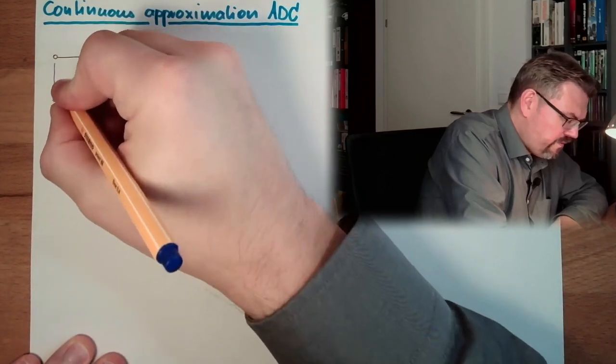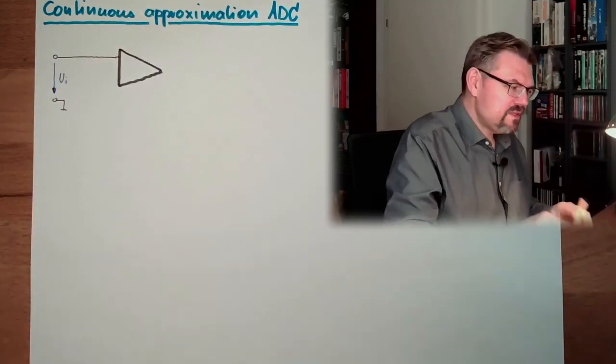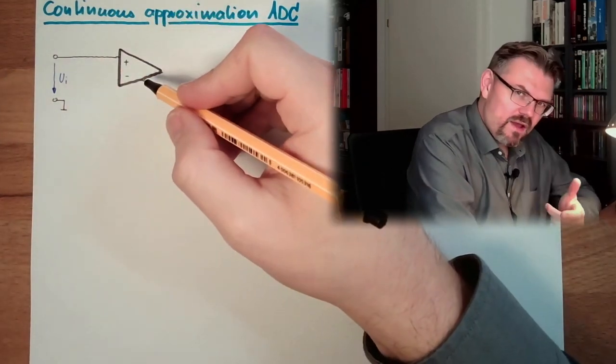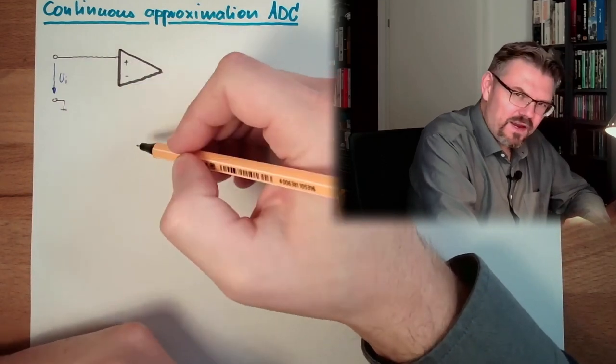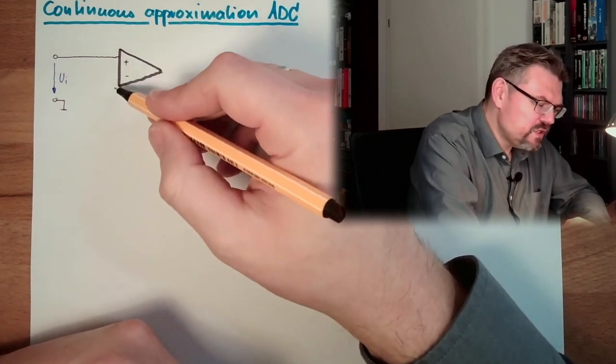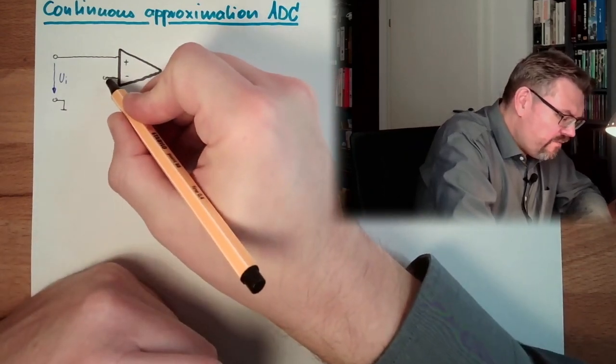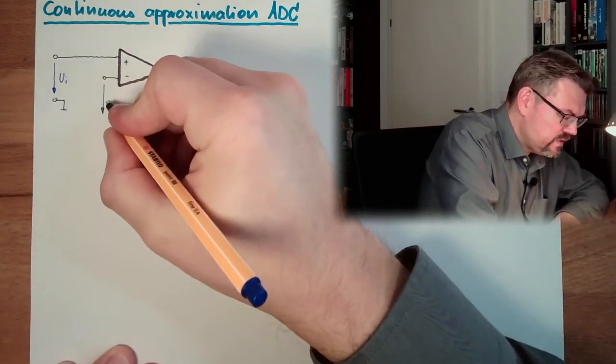This is the voltage we want to have a value for, and we put this into a so-called differential amplifier. This amplifier is gaining the difference between plus and minus input, only the voltage difference between plus and minus. Here we have a comparison or a compensating voltage, you see.